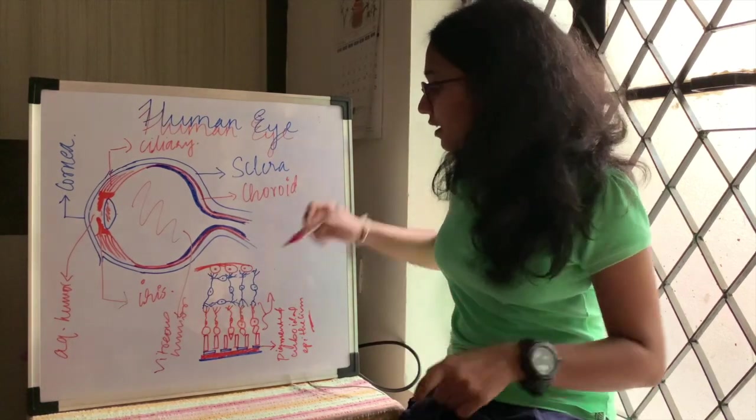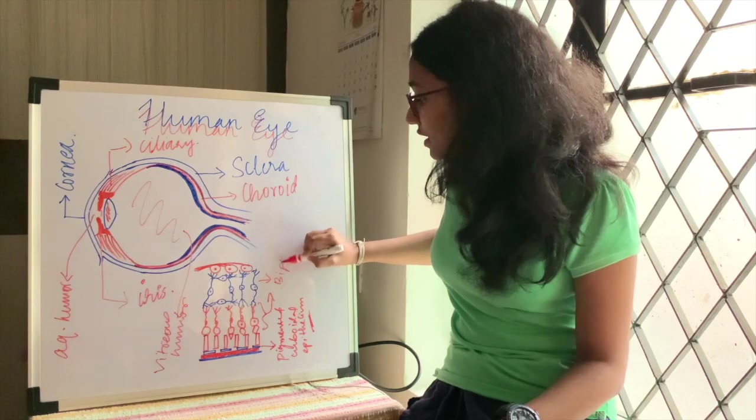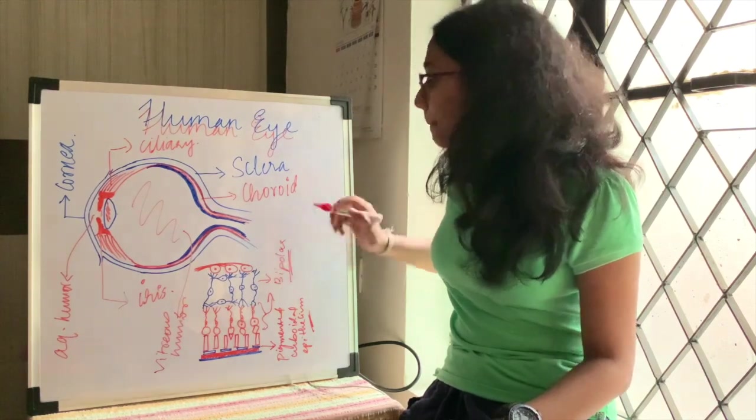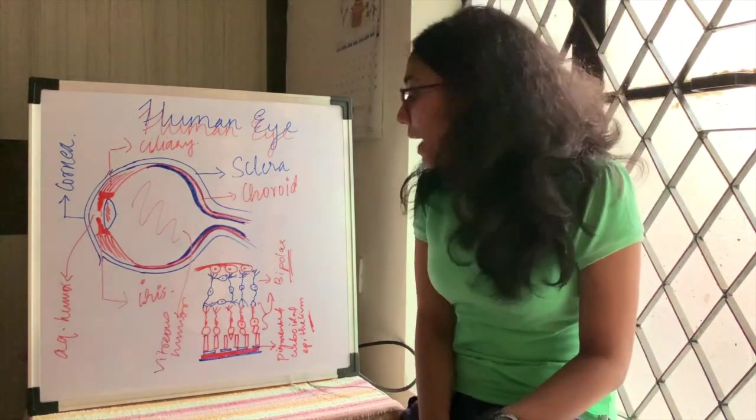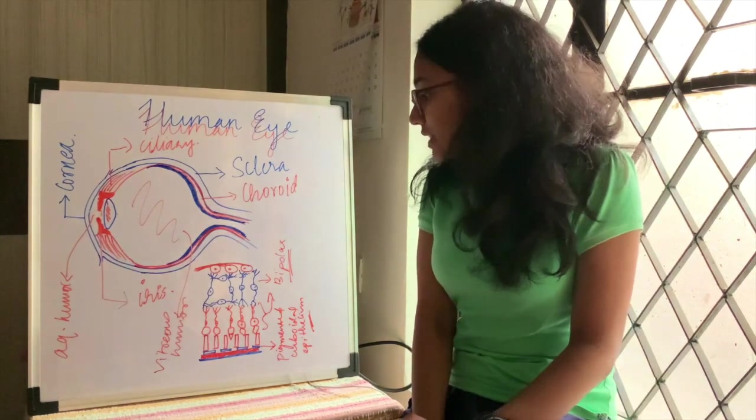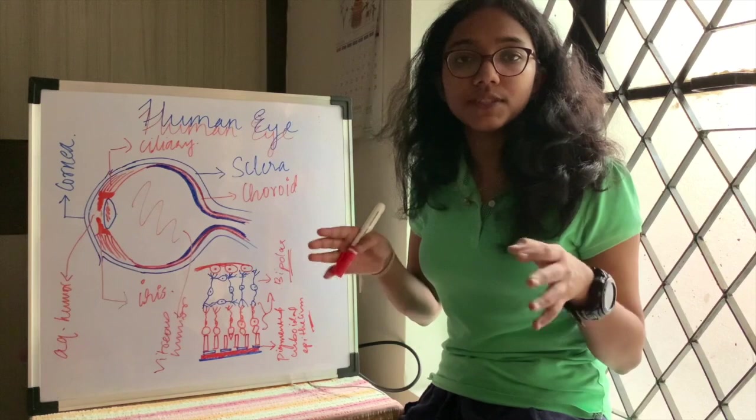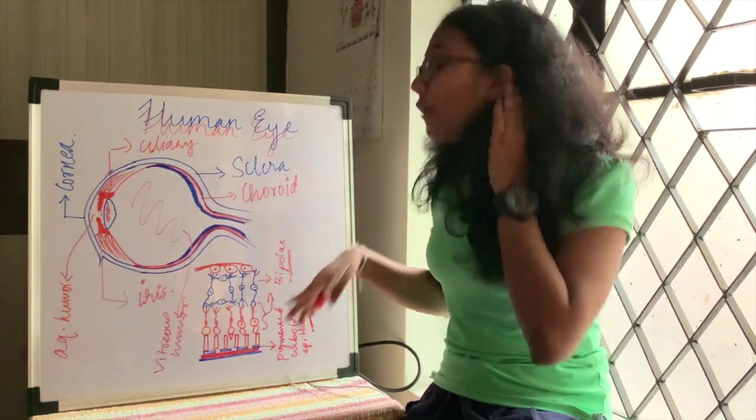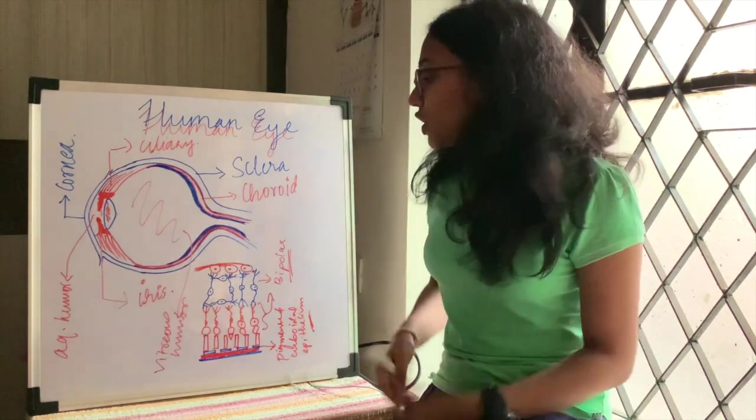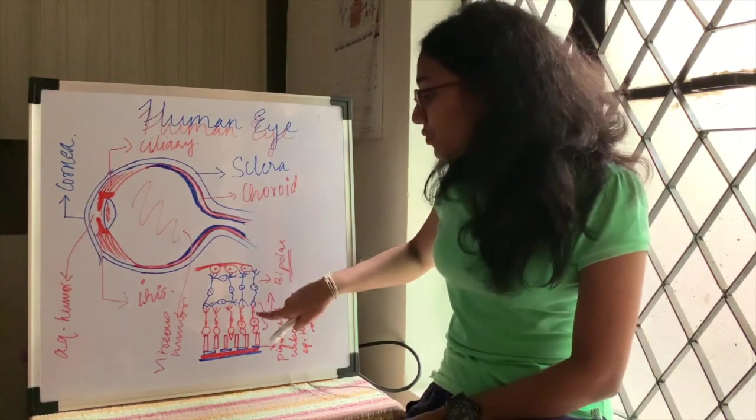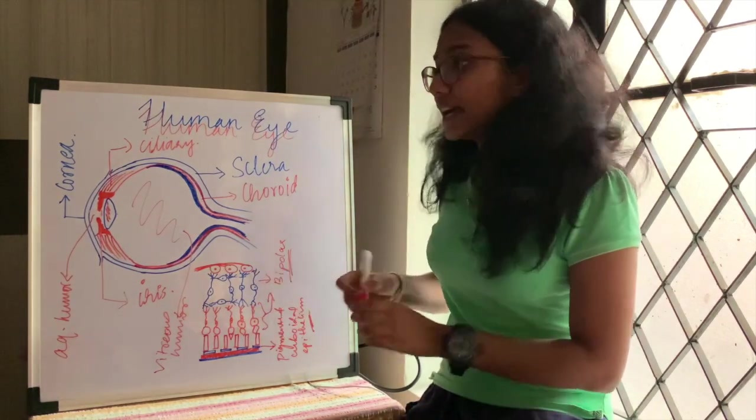After photoreceptor cells, we have bipolar cells. These blue ones are known as bipolar cells. Now, these bipolar cells, as the name says, have two polarities. We've also done it in the nerves videos I've done before.